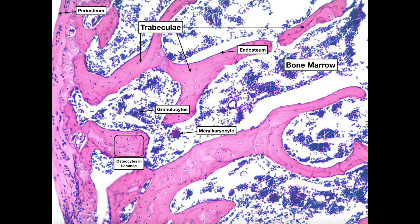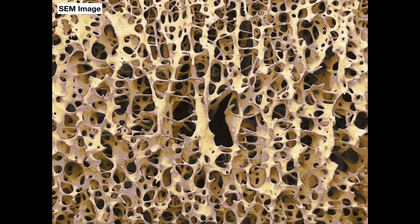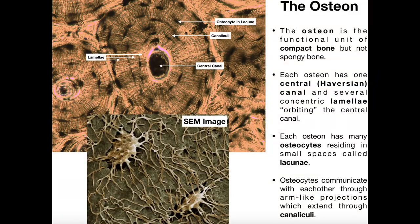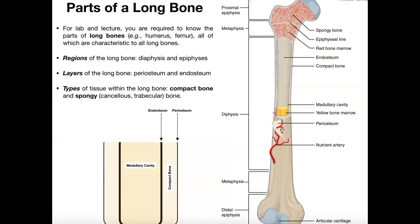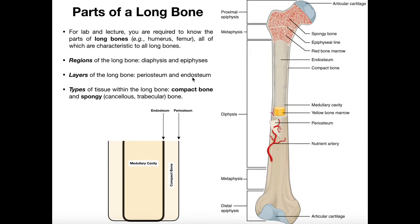Hopefully this gave you a good understanding of the differences between trabecular bone — also called spongy bone — and compact bone, and you understand the locations of each. Please make sure to like this video and subscribe to my channel for future videos and notifications. Thank you very much.